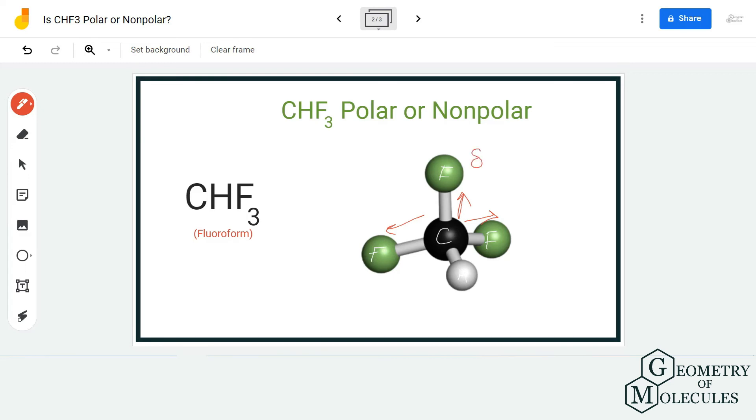The areas around fluorine atoms have partial negative charges, and the rest of the areas have partial positive charges. As there is formation of poles in this molecule, CHF3 is a polar molecule.